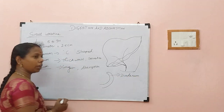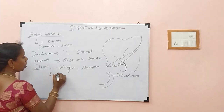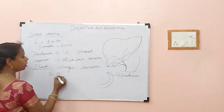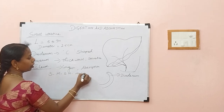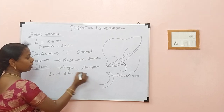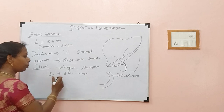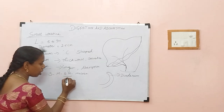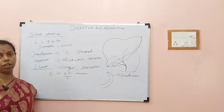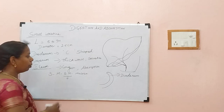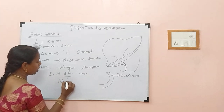The duodenum has all four layers. It starts from serosa, muscularis, submucosa, and mucosa — all four layers are present. One unique point: in other places, goblet cells secrete mucus, but here in the submucosa, we have Brunner's glands.